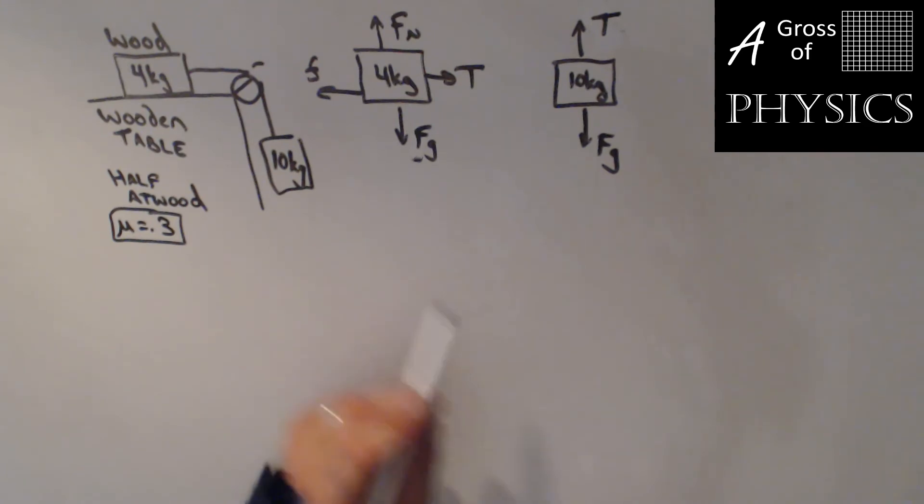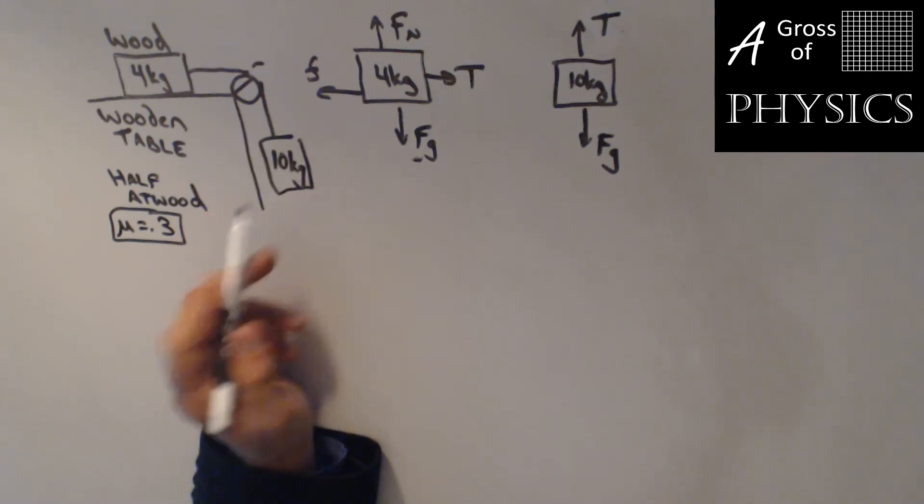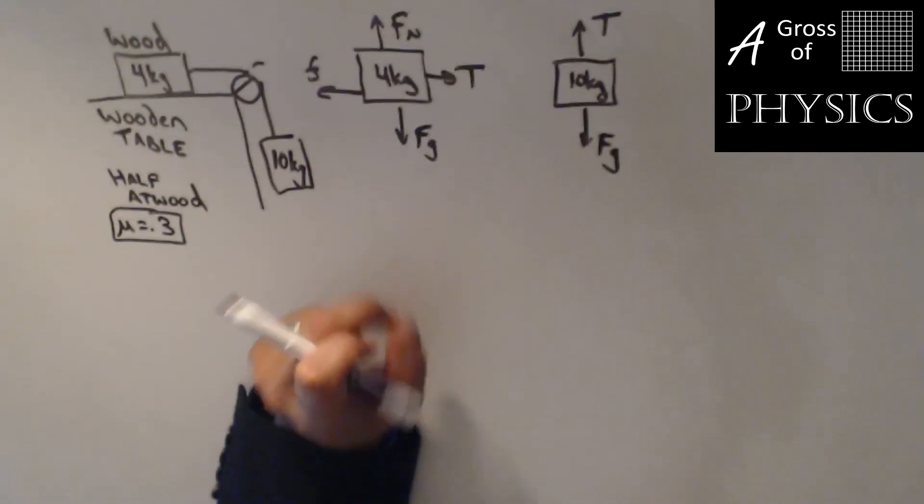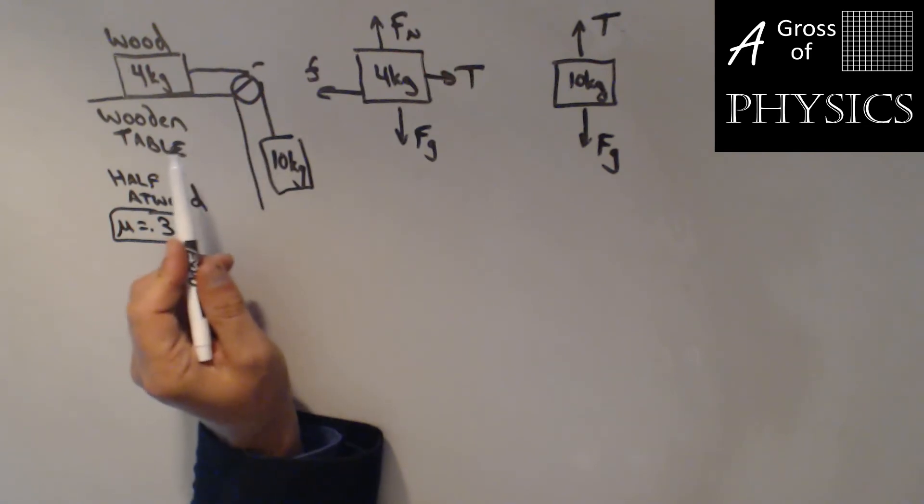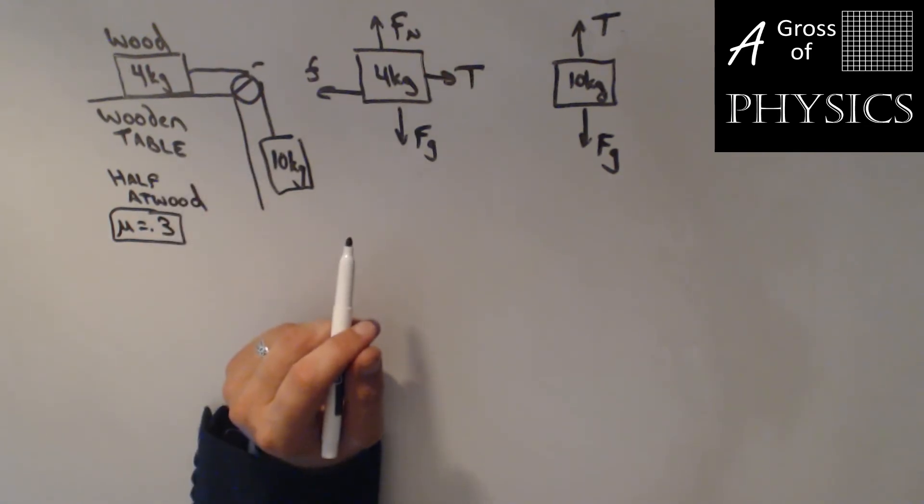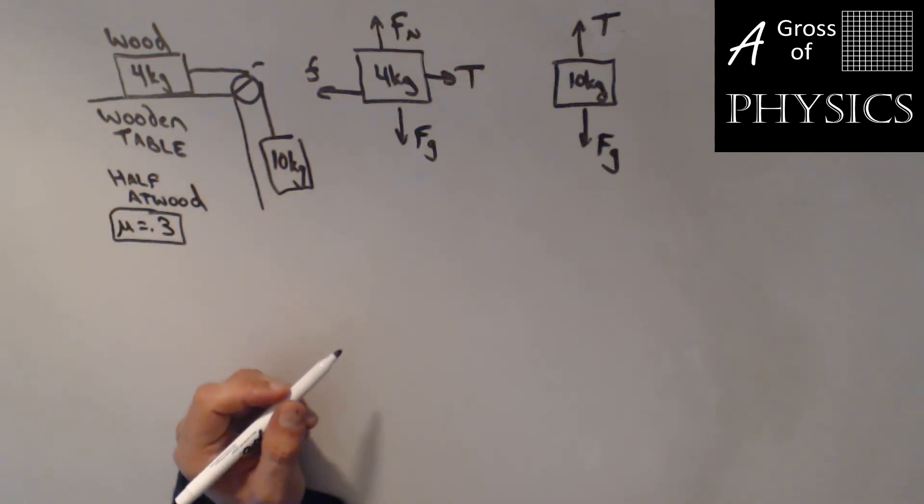If there were no rope and we just cut the rope, then the 10 kg mass would fall with an acceleration of -9.8 m/s². But the rope is actually slowing it down. The wood itself is acting as an impedance of this block in the first place, and then we have the wooden table also slowing it down because of friction.